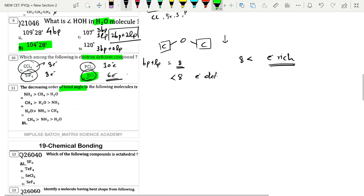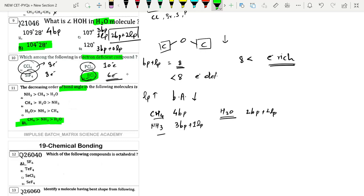The decreasing order of bond angle: bond angle relation is that as lone pairs increase, bond angle decreases. CH4 has only four bond pairs, NH3 has three bond pair plus one lone pair, and H2O has two bond pairs plus two lone pairs. More lone pairs means smaller bond angle. So the order is CH4 greater than NH3 greater than H2O, which is option D.